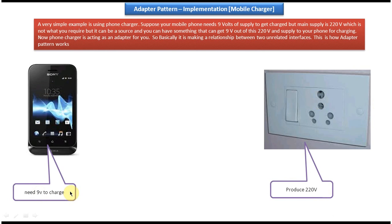Now if you see this, this mobile phone cannot be directly connected to the electrical socket. So this phone and the electric socket are incompatible. To make them work together we have to introduce an adapter in between.